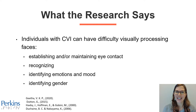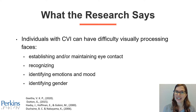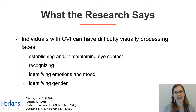What does the research say? What do we already know about access to people for individuals with CVI? We know that it can be difficult for them to visually process faces, which includes establishing and or maintaining eye contact, recognizing those around them, identifying emotions and mood of those around them, and identifying gender.